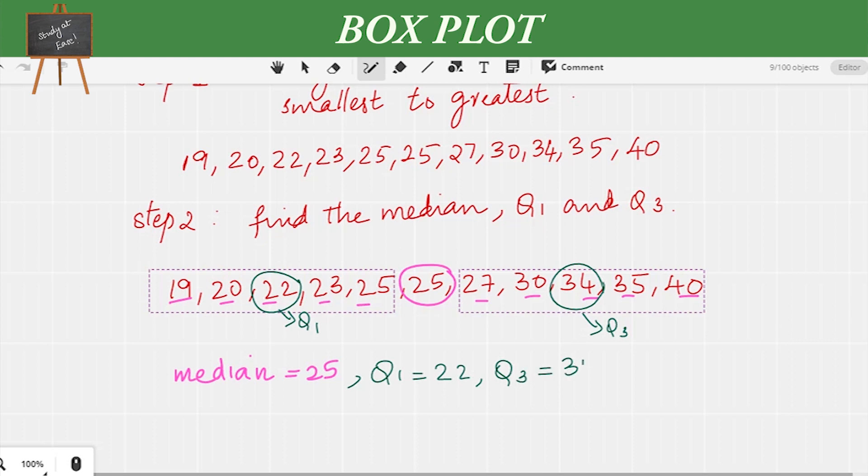Let us mark the extreme values, the minimum and the maximum. The minimum value is 19 and the maximum value is 40. A box plot is all about showing the distribution of data using a number line.